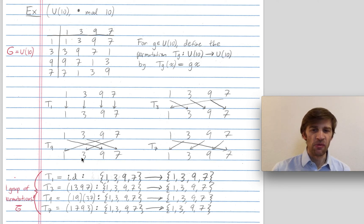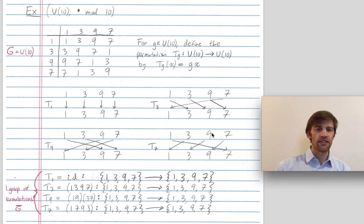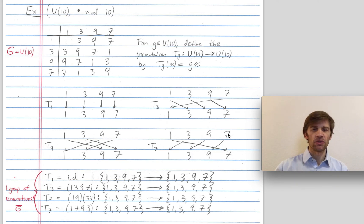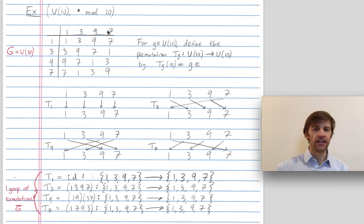Let's do this one more time. How does the permutation T7 act? 1 maps to 7. 3 maps to 7 times 3, which is 21. 9 maps to 9 times 7, which is 63, or 3. And 7 maps to 7 times 7, which is 49, or 9. So my elements of the group 1, 3, 9, and 7 have been transformed into permutations T1, T3, T9, and T7.